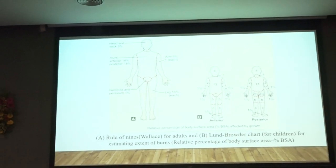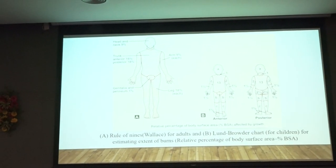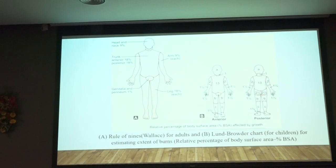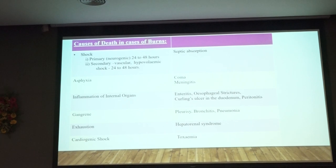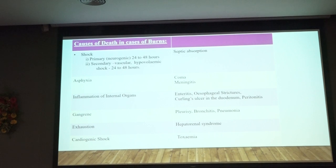The rule of 9, the Wallace rule of 9, and the Lund-Browder chart for children are used for surface area assessment. For causes of death in burns: immediately due to primary neurogenic shock; secondarily due to hypovolemic shock, asphyxia, toxemia, septicemia, and cardiogenic shock. Late complications include stricture, Curling's ulcer, and hepatorenal syndrome.